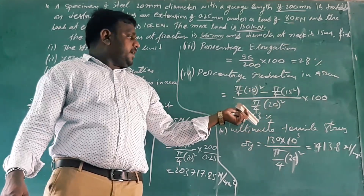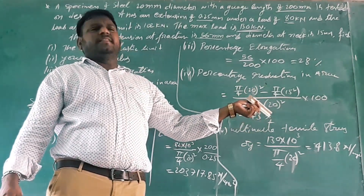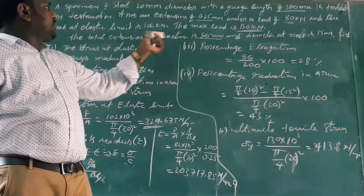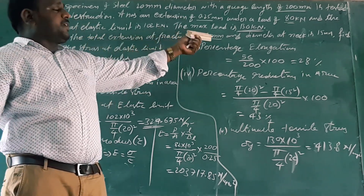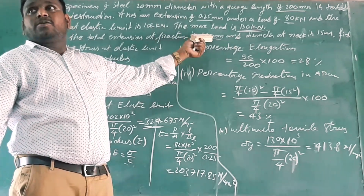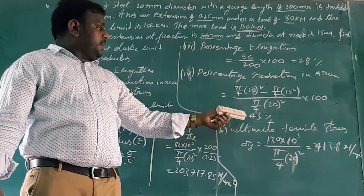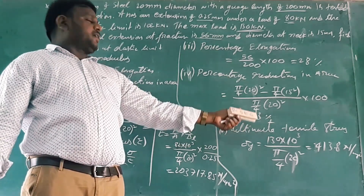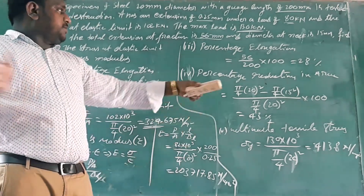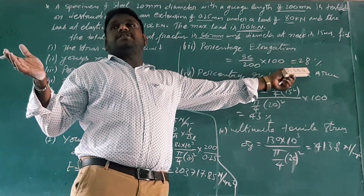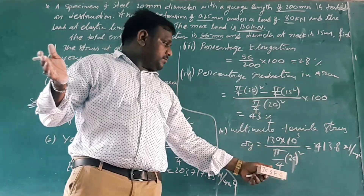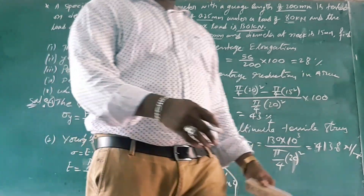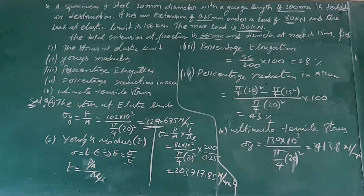Summary of results: percentage of reduction in area is 43%. Percentage of elongation is 28%. The yield stress is 324 N/mm², and the ultimate stress is 413.8 N/mm². The modulus of elasticity is 34.75 kN per square mm, approximately 200,000 N/mm².